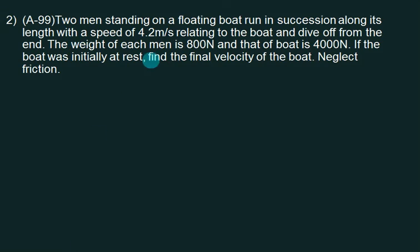Two men on a floating boat run in succession along its length with a speed of 4.2 meters per second relative to the boat and dive off from the end. The weight of each man is 800 newtons and that of the boat is 4000 newtons. The boat was initially at rest. Find the final velocity of the boat. Neglect friction.